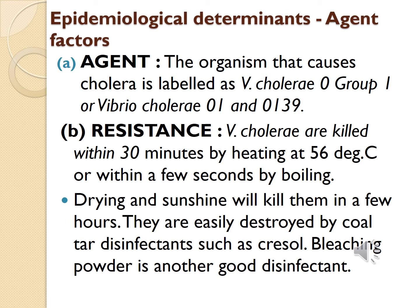This bacteria excretes an exotoxin in the small intestine, which produces the diarrhea. It does not affect any tissue other than the intestinal epithelial cells. Regarding resistance, this bacteria is rapidly killed by heating within 30 minutes at 56°C, or within a few seconds by boiling. Drying and sunshine also kill them in a few hours, and they are readily destroyed by coal tar disinfectants such as cresol. Bleaching powder is another powerful disinfectant.